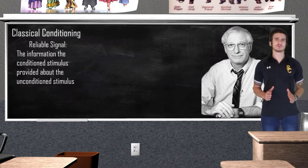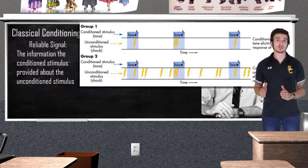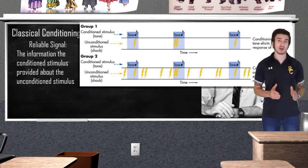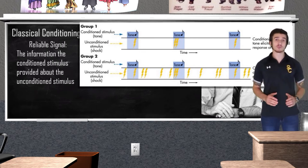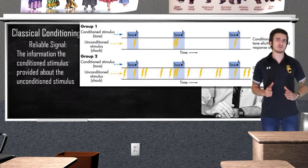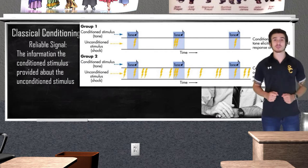In his research, Rescorla had two groups of rats. The control group had a tone paired with a shock — the rats would hear the tone and then receive a brief electric shock, forming a strong association between the tone and the shock. The experimental group would receive the same amount of tone-shock pairings, but they would also receive extra additional shocks at random times. These rats would not form a strong association between the tone and the shocks because they were receiving less reliable information.